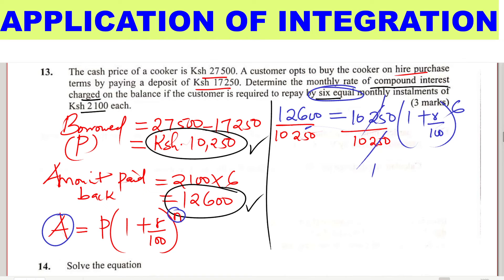So $12,600 divided by $10,250, correct to four significant figures, gives 1.229. On the right side, we have (1 plus R over 100) raised to power 6.